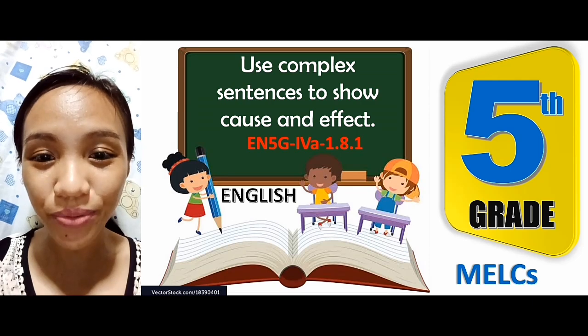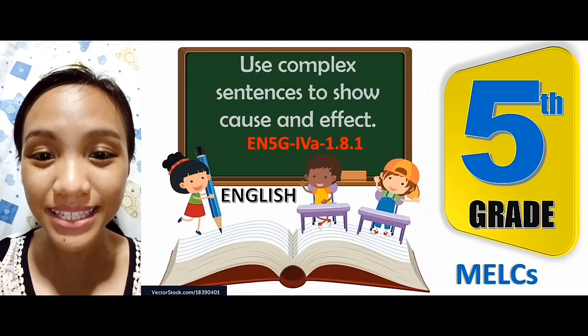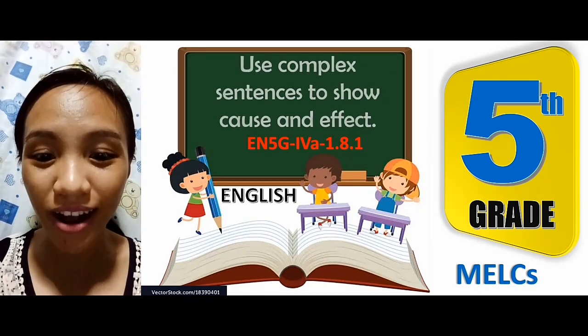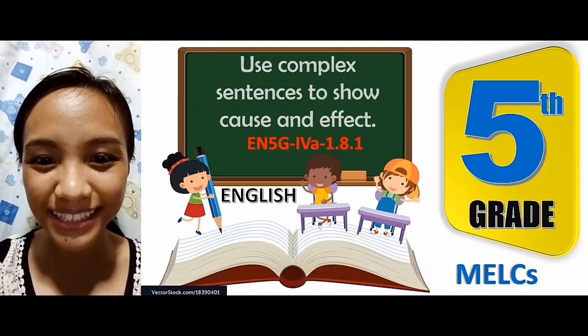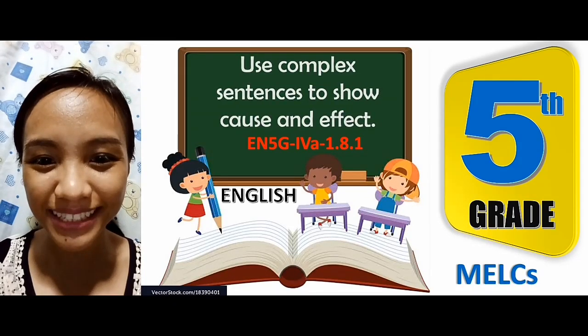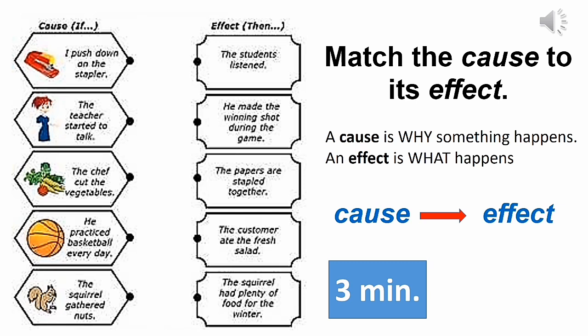In this video, we're going to use complex sentences to show cause and effect. To start with, let us match the cause to its effect. A cause is why something happens, and an effect is what happens. I'll give you 3 minutes to answer the activity. Your time starts now!